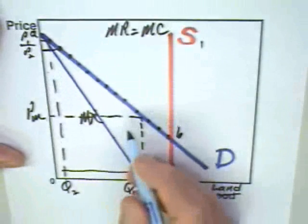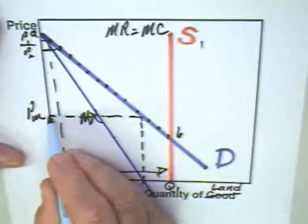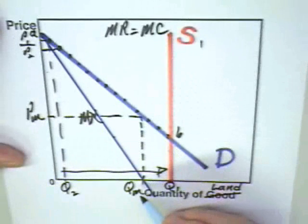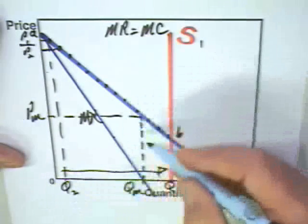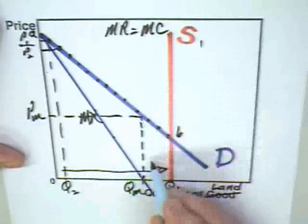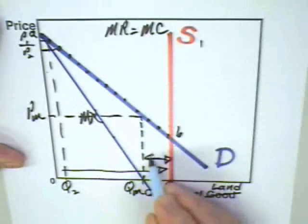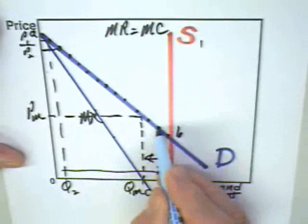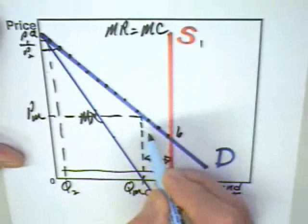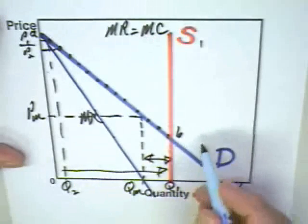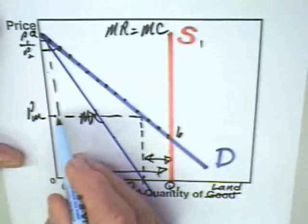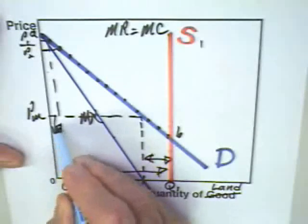But again, the buyers can reason, well, if we pay PM, the monopolist is only going to get rid of QM units of this durable good, QM units of land. It would still have that much in the way of land. So they know that the monopolist would have to lower the price to get rid of the rest of the land, and as a consequence, they would hold off buying until the price came down.